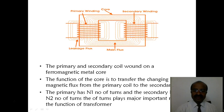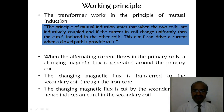The primary winding and secondary winding are connected through the core, that is electromagnetically connected. The core is shown in the figure. There is main flux and also leakage flux. The core is made of ferromagnetic material. The function of the core is to transfer the changing magnetic flux from the primary coil to the secondary coil. The primary has a number of turns and the secondary has a number of turns.